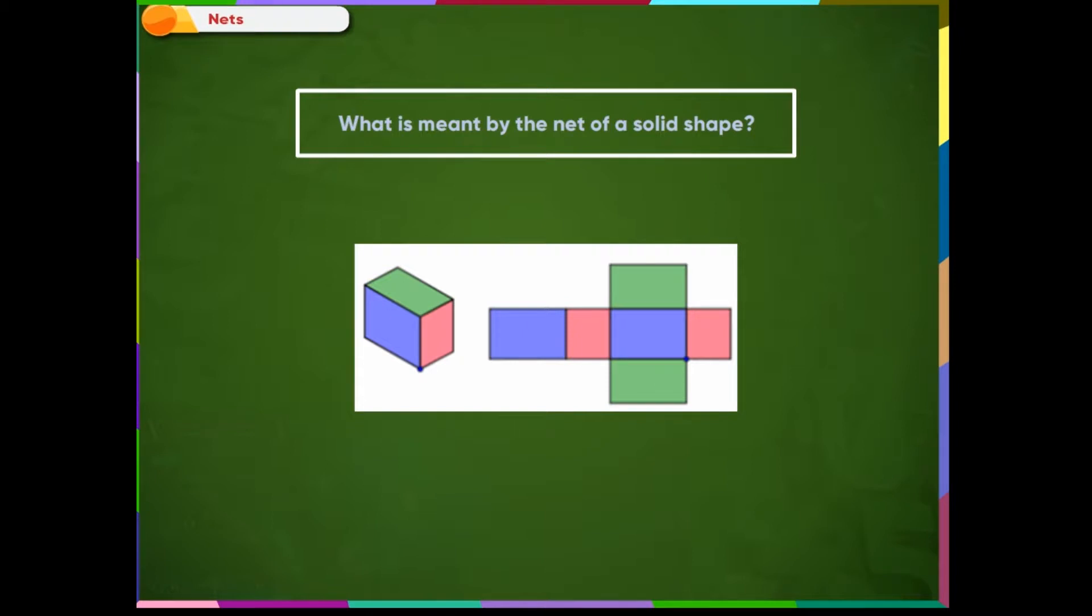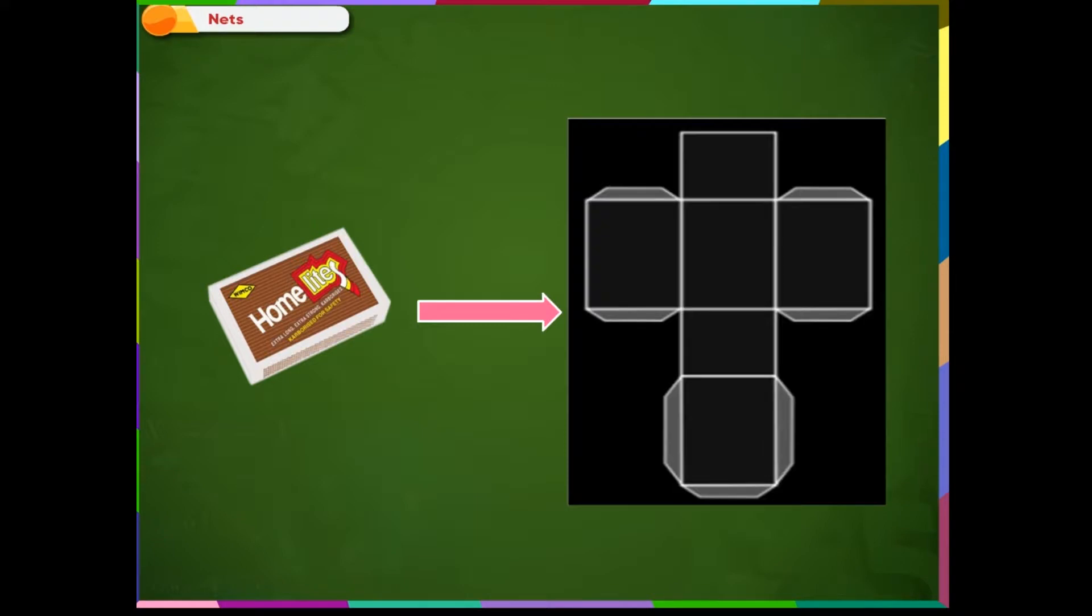You can do this activity first before proceeding to the next part of the lesson. Take a matchbox. Cut along the edges and flatten out the box. This is the net for cuboid.